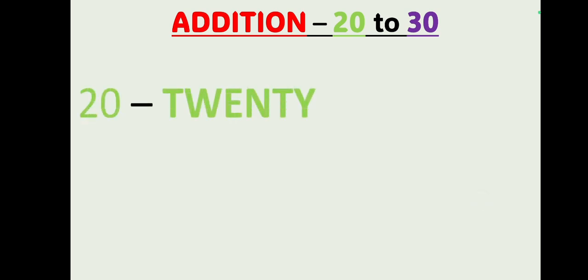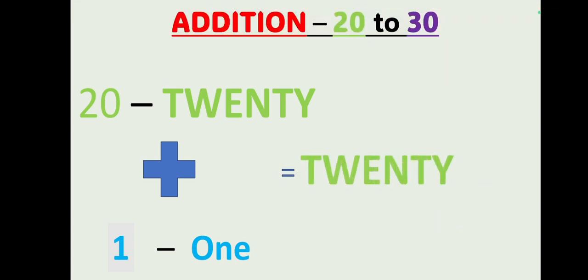The plus sign is called the addition sign — it is used to join two numbers. So 20 plus 1 equals 21. We write down the number 20 — T W E N T Y — then 1 — O N E. So 20 plus 1 equals 21. First we write down the number 20, then we write down 1, and we get 21. Similarly, we are going to learn 22, 23, all the way till 30.